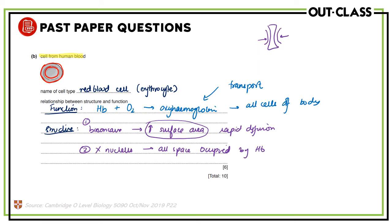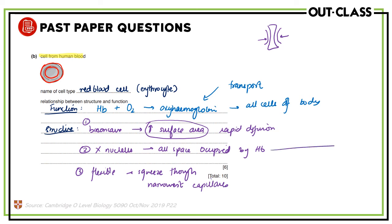The more hemoglobin there is, the bigger the advantage, because we want maximum oxygen to be transported. The third adaptation is that the red blood cell is flexible, so it can squeeze through the narrowest capillaries without bursting. Even in the smallest capillaries in the body, where only one red blood cell can pass at a time, they can very easily go through in single file. These three structural adaptations enable red blood cells to carry out their function.